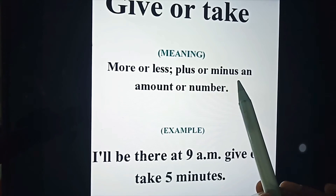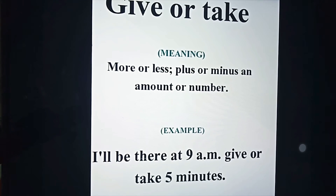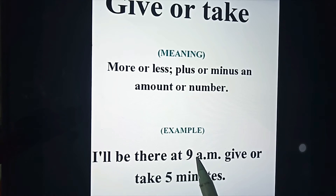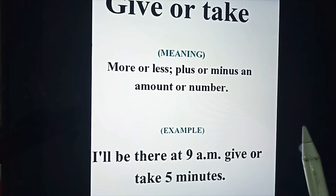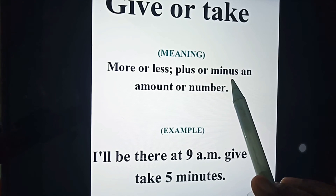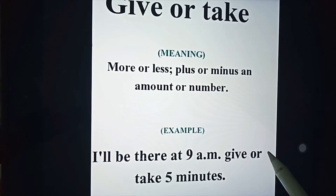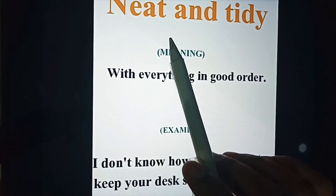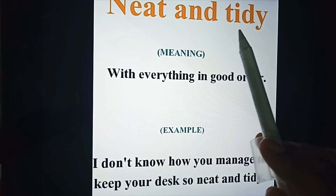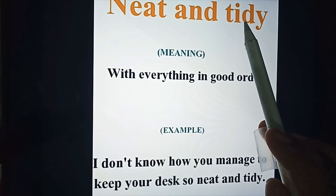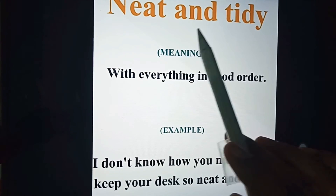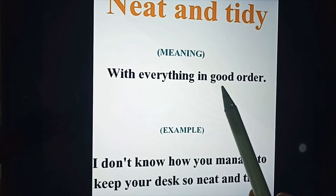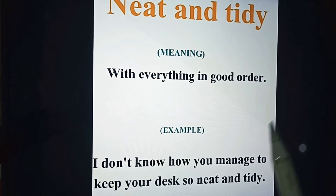'Give or take' means more or less — plus or minus an amount or number. Example: 'I'll be there at 9 AM, give or take five minutes,' meaning five minutes before or after nine. Also: 'neat and tidy,' which means with everything in good order. Example: 'I don't know how you manage to keep your desk so neat and tidy.'